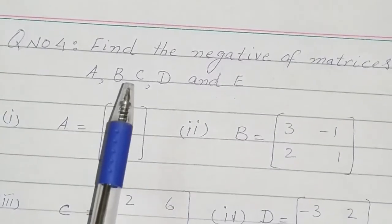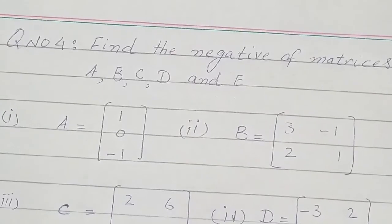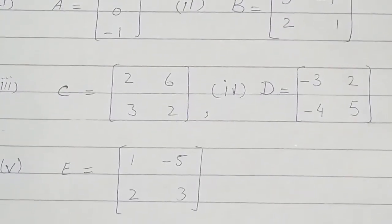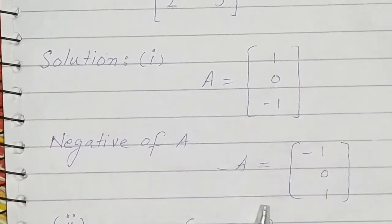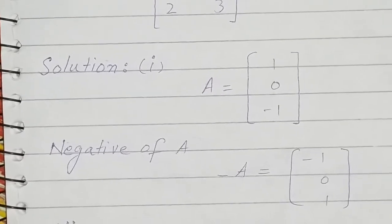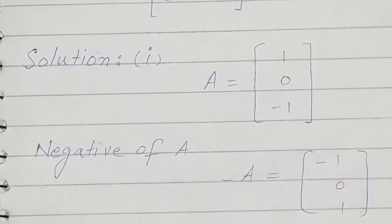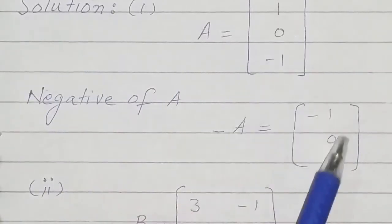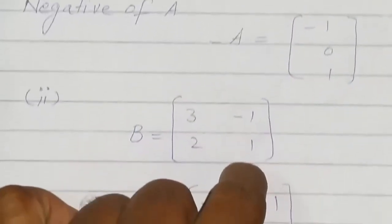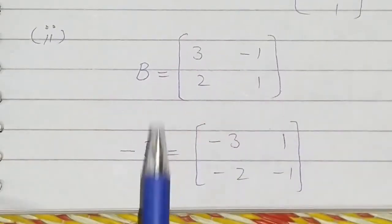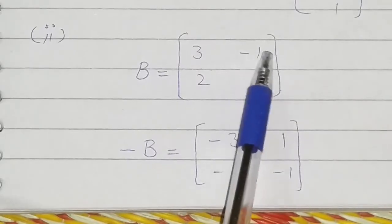Question number four: find the negative of matrices A, B, C, D, and E. To find the negative of a matrix, we just change the signs of its elements. For matrix A, one becomes negative one, zero stays the same, and negative one becomes positive one. For matrix B, plus three becomes minus three, minus one becomes plus one, plus two becomes minus two, and plus one becomes minus one.